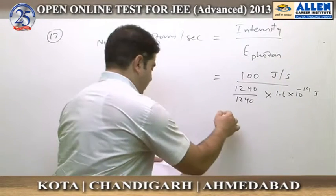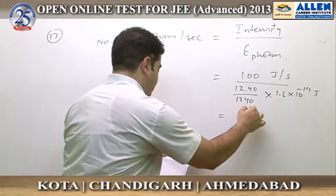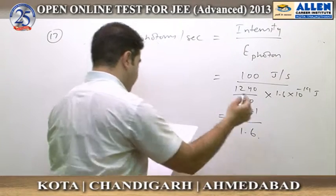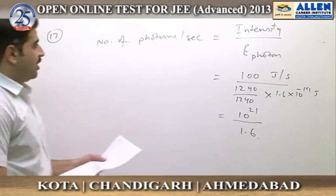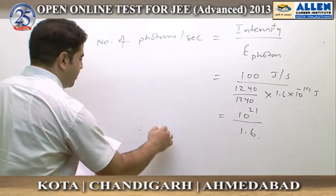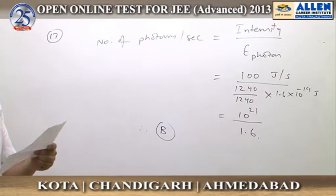From this calculation, the number of photons per second comes out to be 10²⁰ divided by 1.6. Therefore, option B is correct for question number 17.